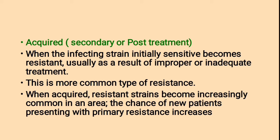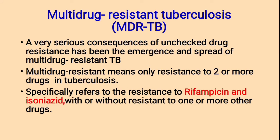When acquired resistant strains become increasingly common in an area, the chance of new patients presenting with primary resistance increases. Multi-drug resistant tuberculosis (MDR-TB) refers to resistance to two or more drugs — specifically resistance to rifampicin and isoniazid, with or without resistance to other drugs.